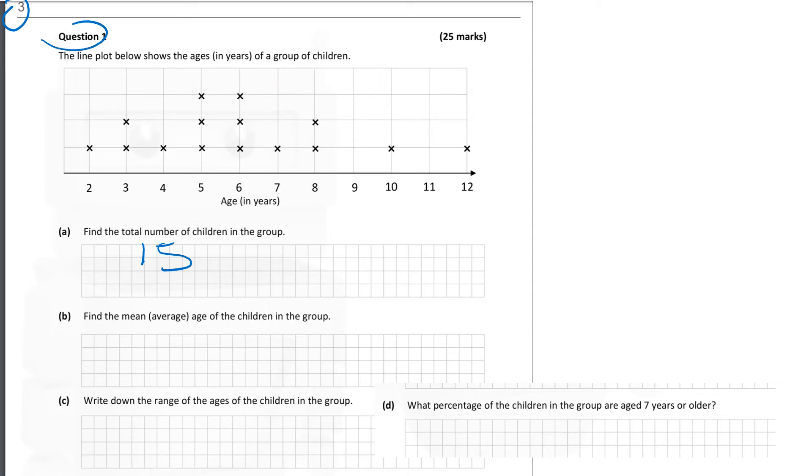Now, part B, find the mean average age of the children in the group. So the mean is calculated by the sum of the numbers. In this case, the sum of the ages of the children. The sum of the numbers divided by the number of numbers.